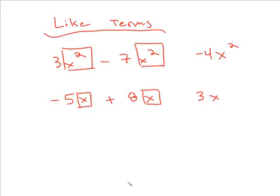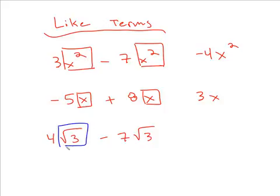It works the same way with radicals. Let's say you have 4 radical 3 minus 7 radical 3. The index and the radicand — if they are exactly the same, that means they are like radicals, meaning you can add or subtract them. So 4 minus 7 gives you negative 3, and nothing changes with the radical.